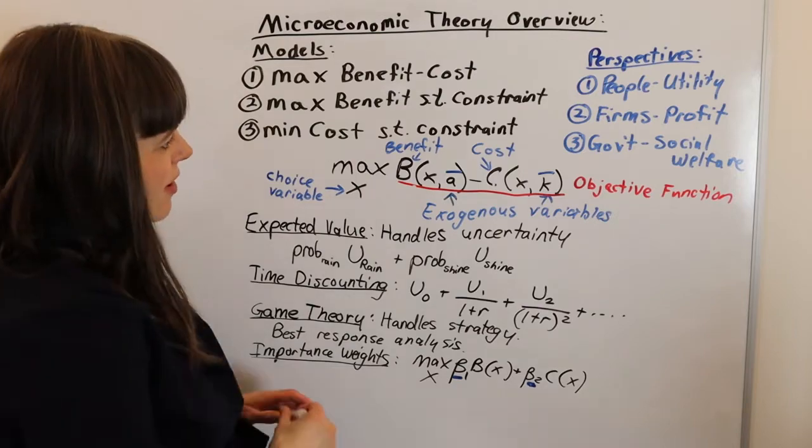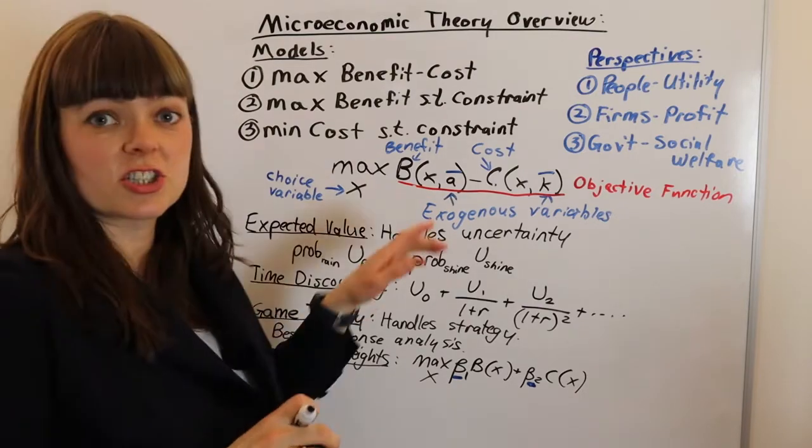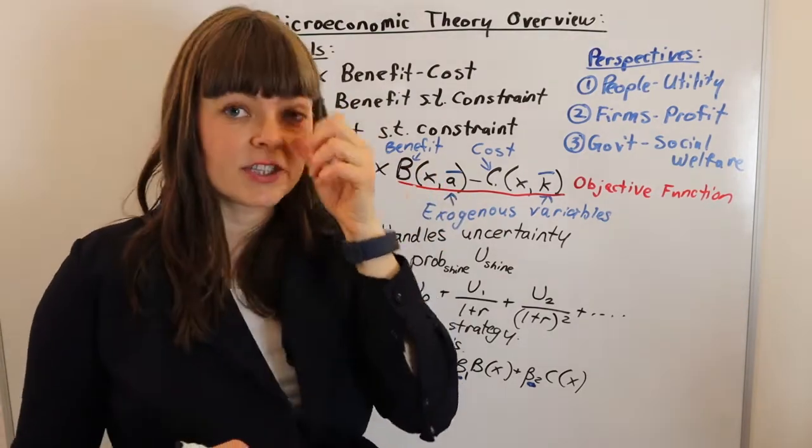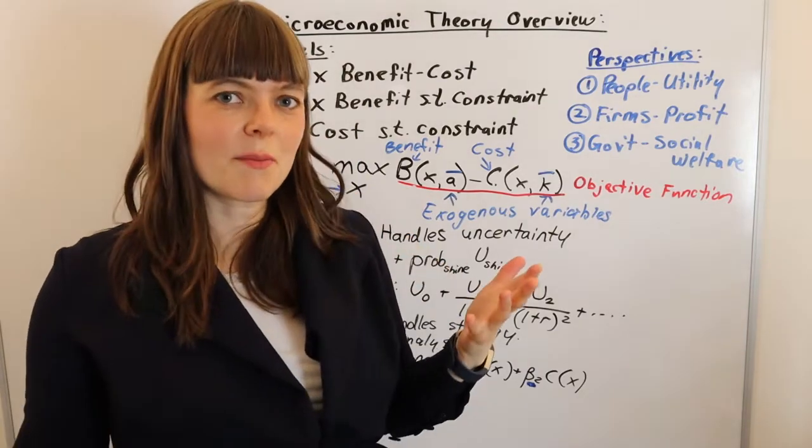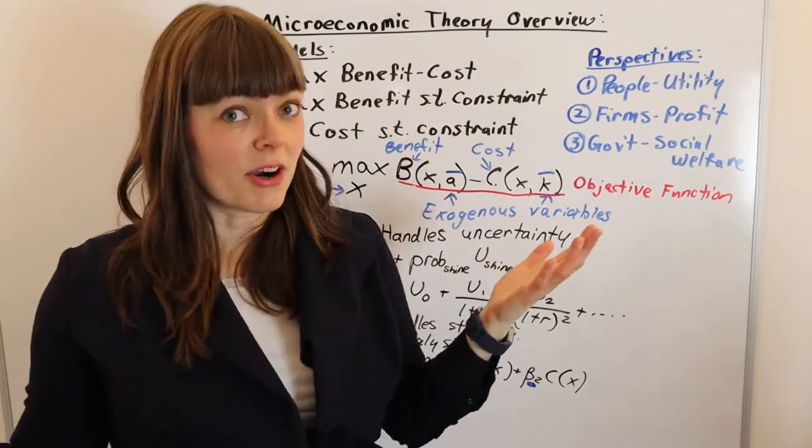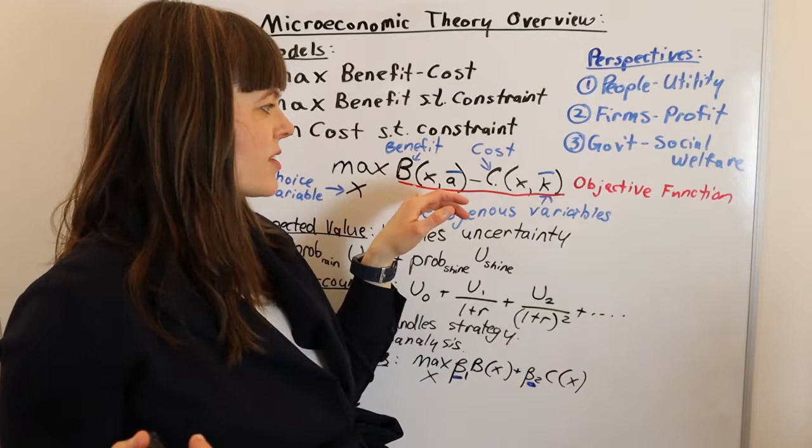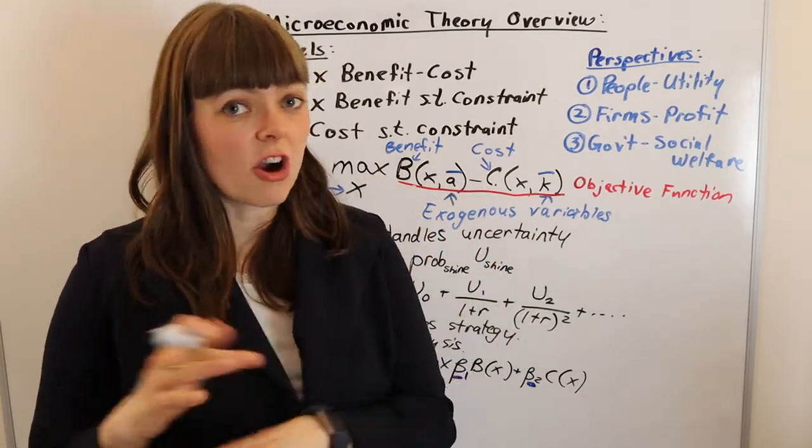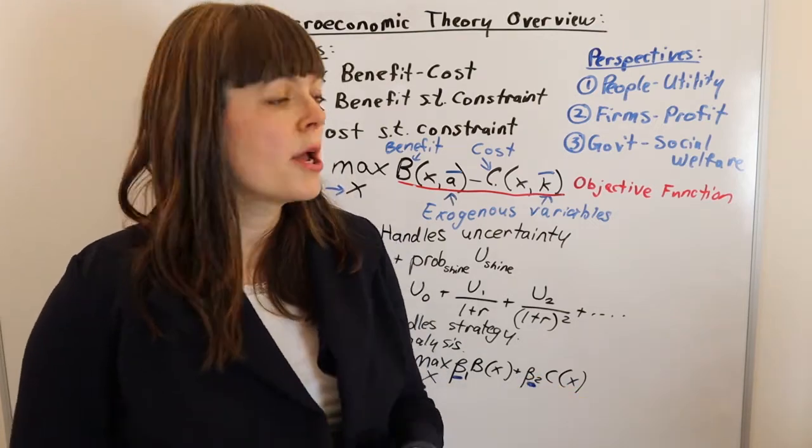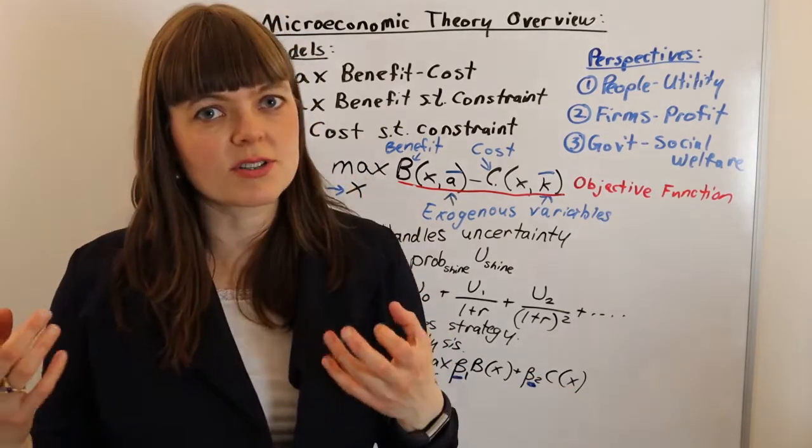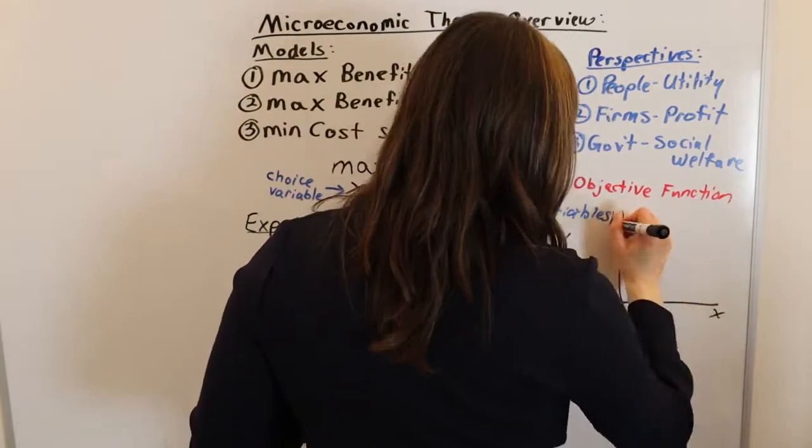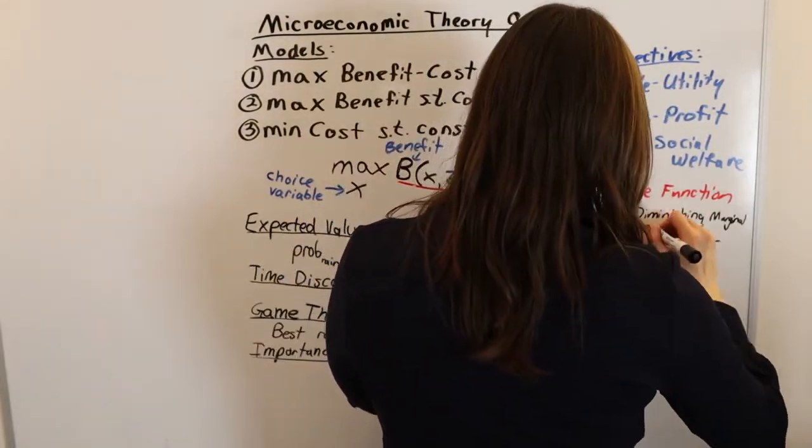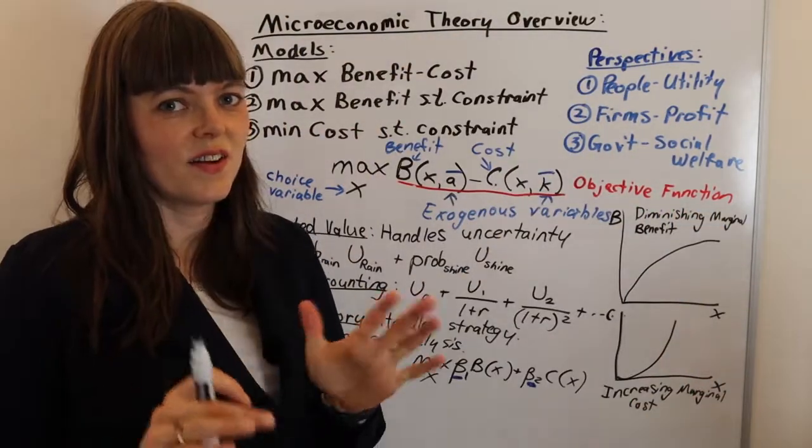The last piece in a quick overview of microeconomics modeling is just the shapes of these costs and benefit functions. We're going to be thinking about those shapes at the margin. There's going to be a classic benefit shape and a classic cost shape. These aren't the only shapes out there, but these shapes will help us think more deeply about what's going on.